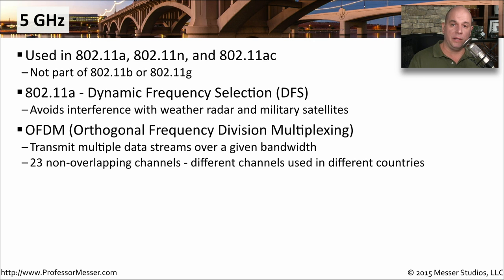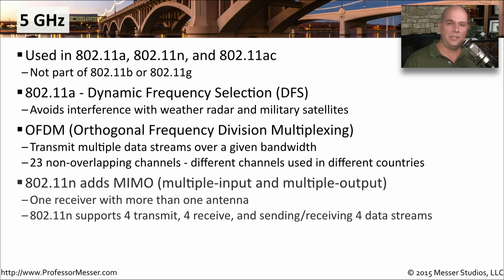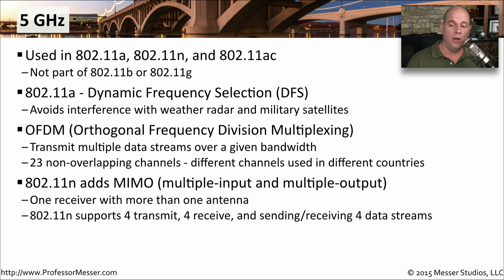The availability of these frequencies will differ depending on what country you're in. To get some of the higher speeds in 802.11n, we take advantage of something called MIMO — multiple input and multiple output. There's a single receiver in 802.11n, but you can have more than one antenna, so you can send and receive on different channels at the same time. You can support up to four transmit and four receive, so there are four separate data streams that can all be communicating at the same time with 802.11n.